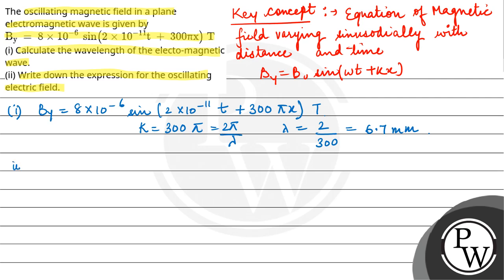Now for the expression for the oscillating electric field: E0 = c × B0, where c is the speed of light, so 3 × 10^8 × 8 × 10^-6, which gives 24 × 10^2 volts per meter.